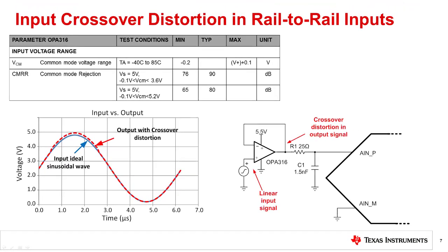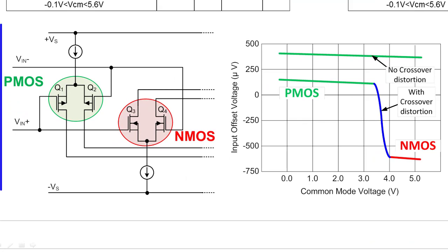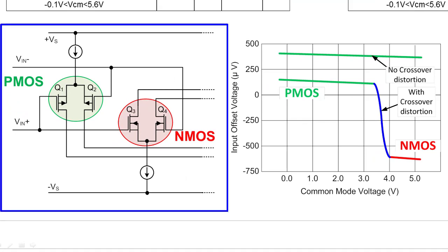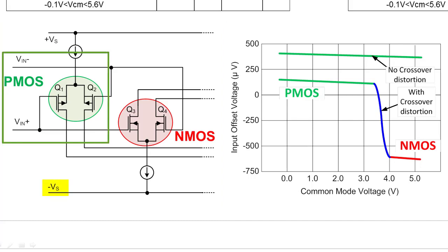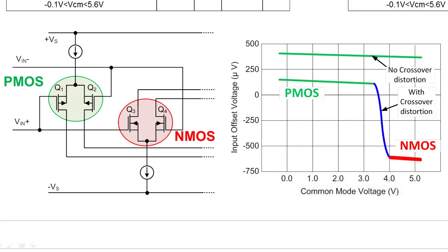Let's take a closer look at what causes input crossover distortion. This slide shows two different ways that a rail-to-rail amplifier is implemented. In general, a transistor input stage cannot achieve linear operation across the entire power supply range. PMOS transistors can be used to get linear operation to the negative supply, and NMOS transistors can be used to get linear operation to the positive supply. One way to achieve rail-to-rail operation, shown on the left, is to use two different input transistor pairs in parallel. The problem with this method is that the offset of the two input pairs will be different, so as the common mode voltage is adjusted, operation switches from PMOS to NMOS and the offset changes.